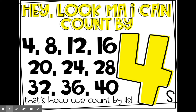Hey look mama made it. Ready? Four, eight, twelve, sixteen. Twenty, twenty-four, twenty-eight. Thirty-two, thirty-six, forty, forty. That's how we count by fours. One more time just for fun. Hey look mama made it. Ready? Four, eight, twelve, sixteen. Twenty, twenty-four, twenty-eight. Thirty-two, thirty-six, forty, forty. That's how we count by fours.